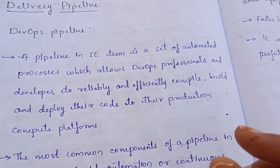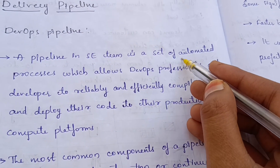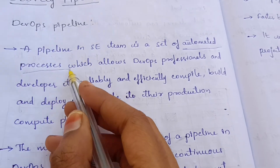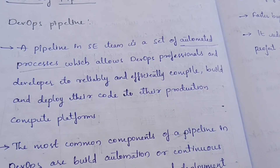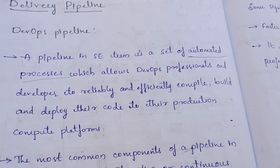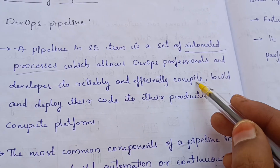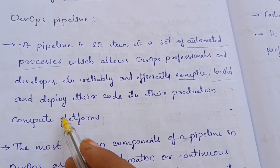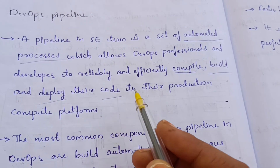and developers to reliably and efficiently compile, build, and deploy their code to their production compute platforms. The code will be compiled, built, and deployed automatically in the pipeline.